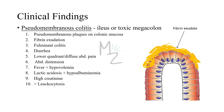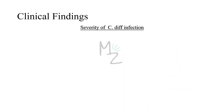Fulminant colitis also presents with abdominal distension, fever, and hypovolemia — since epithelial cell junctions are compromised, fluid leaks leading to hypovolemia. There will be lactic acidosis, hypoalbuminemia, elevated creatinine, and leukocytosis. There are severity stages: mild (diarrhea only), moderate (diarrhea with other symptoms, no severe complications), and severe (severe complications added).